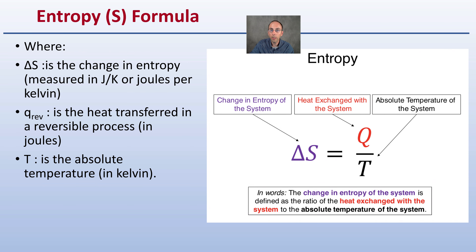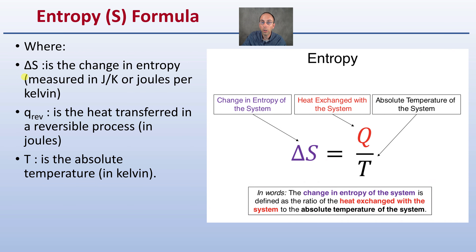In the formula for entropy, delta S — which is change in entropy — is measured in joules per Kelvin. Q represents the heat transferred in a reversible process, measured in joules. T is the absolute temperature measured in Kelvin. So the entropy equation is: delta S equals Q divided by T, the change in entropy equals the heat exchange in a system divided by the absolute temperature.